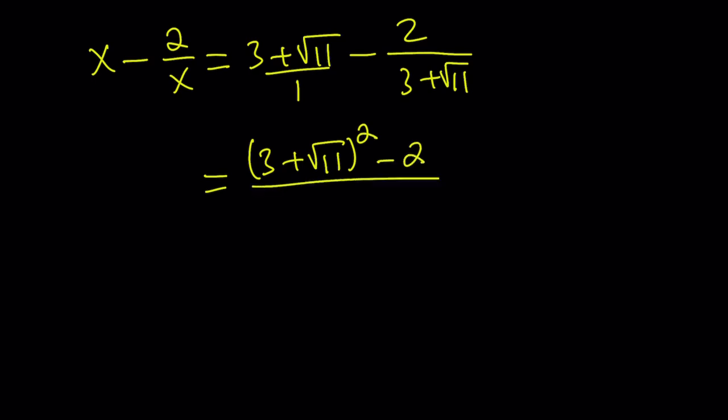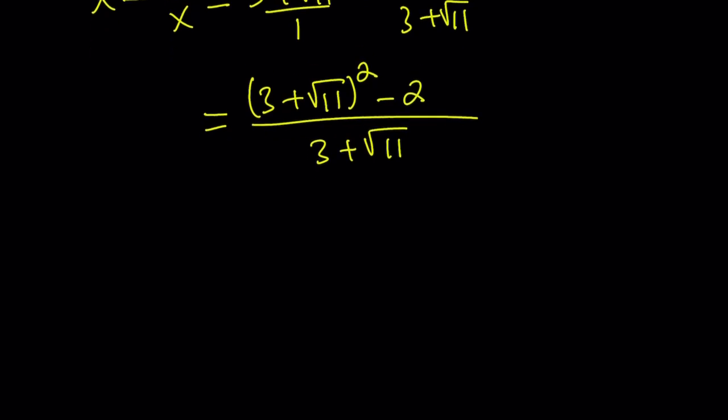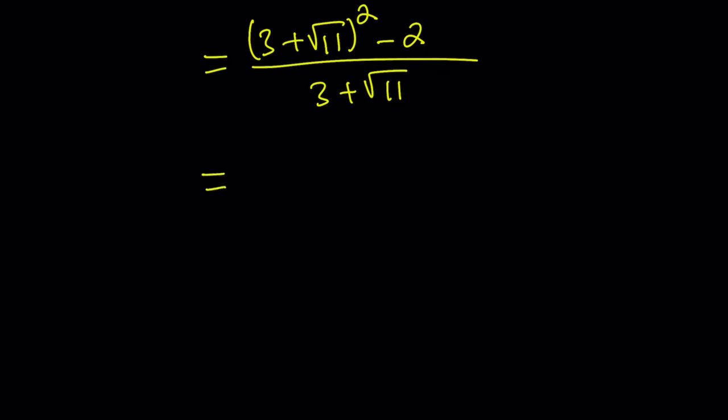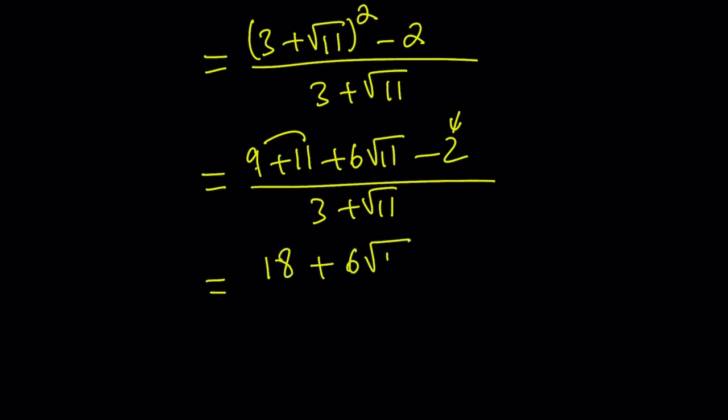Which gives you 3 plus root 11 squared minus 2 divided by the common denominator. So that is the value we're trying to evaluate, so let's go ahead and simplify this. If you square the sum, you get 9 plus 11 plus 6 root 11 minus 2 divided by 3 plus root 11. 9 plus 11 is 20.